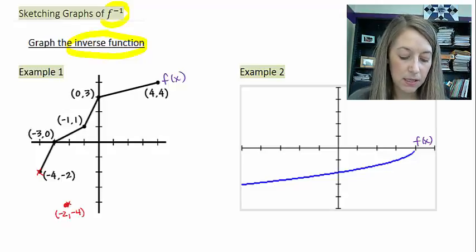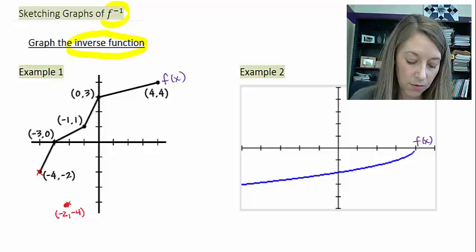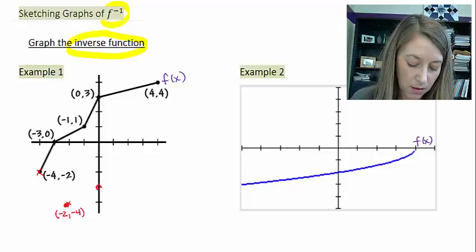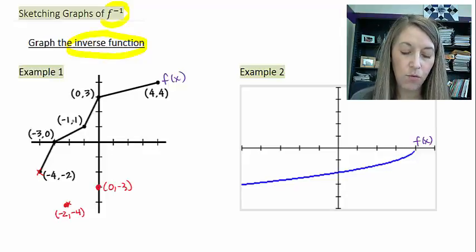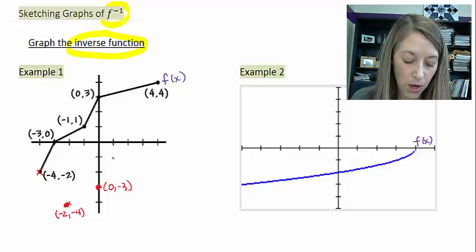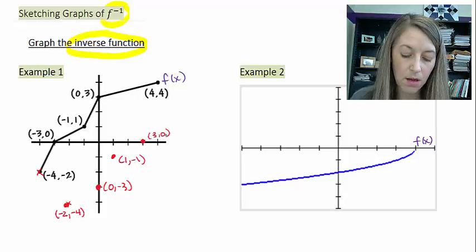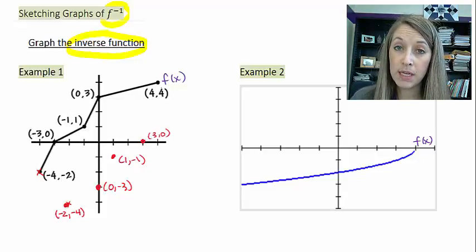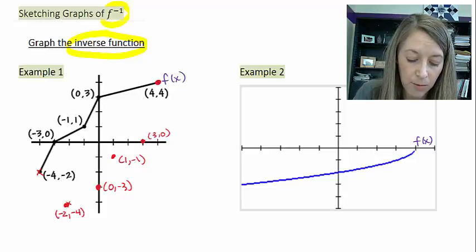Next, (-3, 0) gets interchanged to (0, -3). Then (-1, 1) gets interchanged to (1, -1). Then (0, 3) gets interchanged to (3, 0). And (4, 4) coincidentally gets interchanged to (4, 4), so the exact same point here.